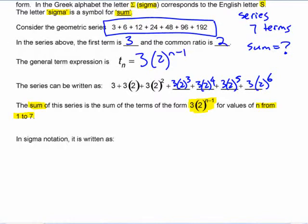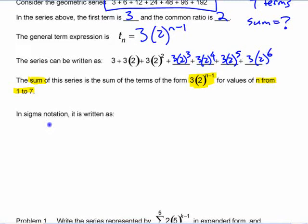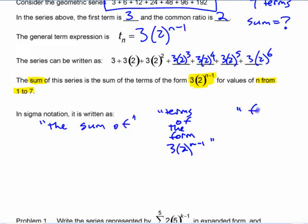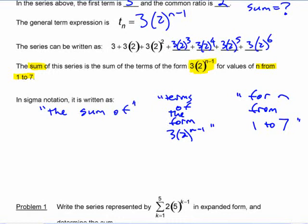If you wanted to write that sum down in shorthand, you could say here's the sum of terms of the form three times two to the n minus one for n from one to seven. Here's the shorthand. The sum of is this. This right here is this Greek letter. That's what that means.